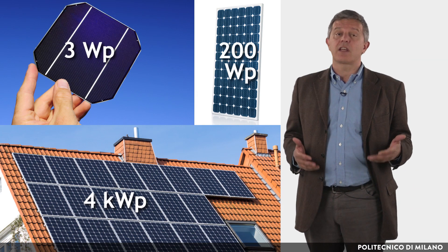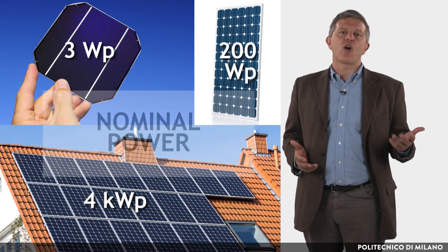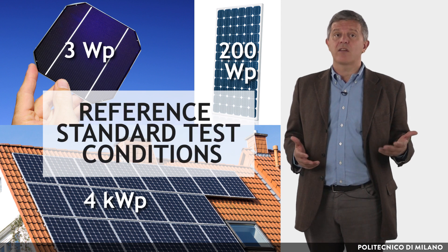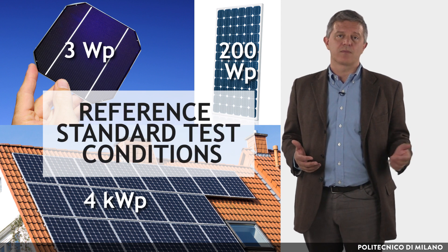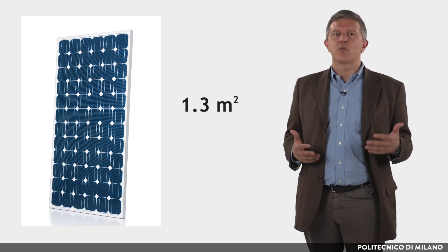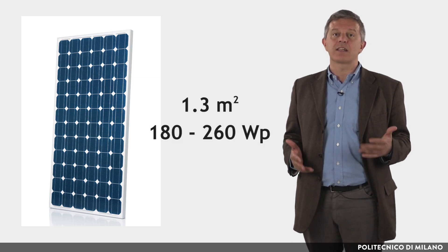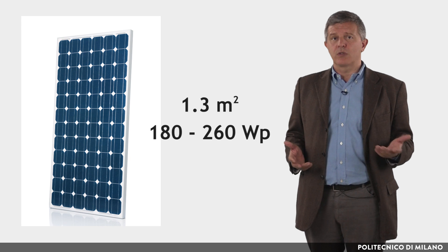In general, the efficiency of the module, as well as of the whole plant, is lower than that of the single cells, due to device and system losses. The power of a photovoltaic device — cell, module or system — is expressed in watt or kilowatt peak, which represents the nominal power that the unit is capable of delivering under standard test conditions. To give an idea, a module of about 1.3 square meters with crystalline silicon cells is rated between 180 and 260 watts peak, according to the quality of the cells.